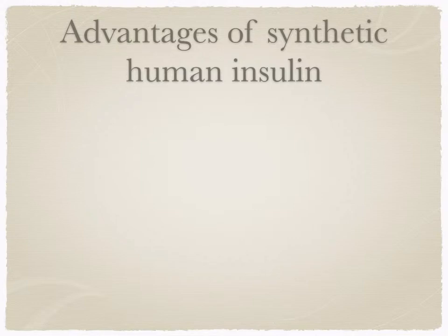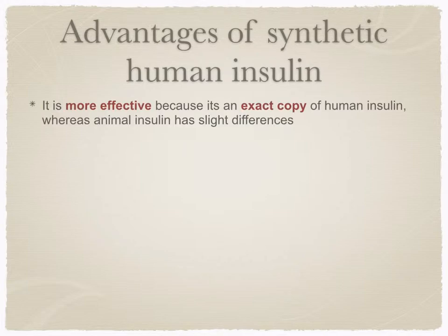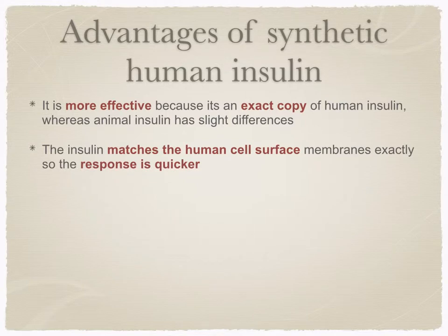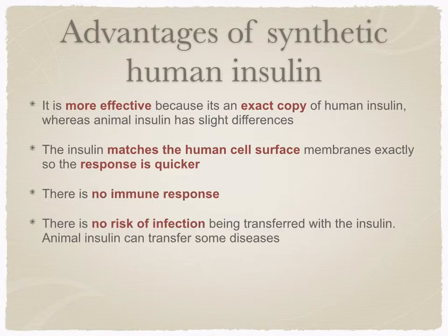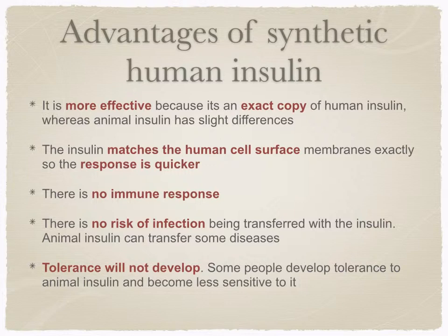Let's have a look at a few advantages of synthetic human insulin. It's more effective because it's an exact copy of human insulin, whereas animal insulin has slight differences. The insulin matches the human cell surface receptors on the membranes exactly, so the response is quicker. There's no immune response, and there's no risk of infection being transferred with the insulin — animal insulin can transfer some diseases. Tolerance will not develop; some people develop tolerance to animal insulin and become less sensitive to it.